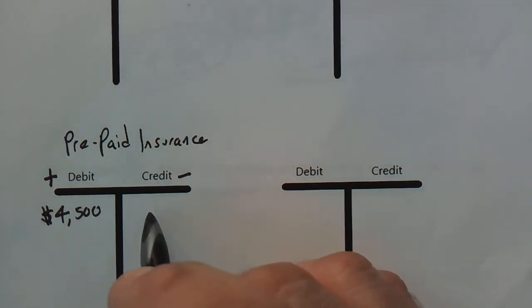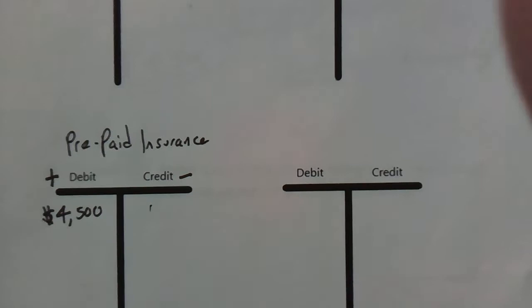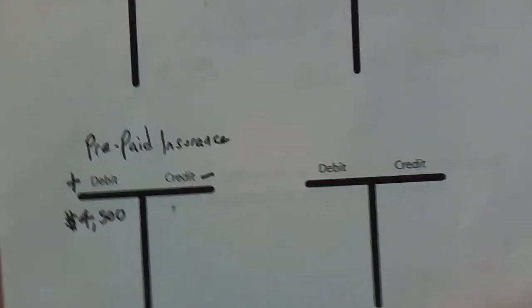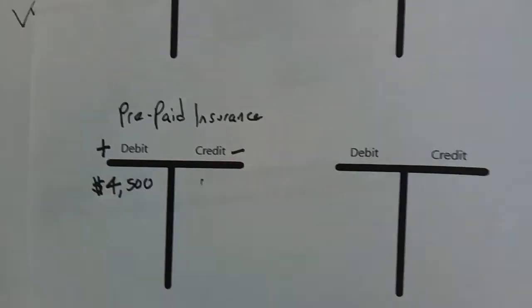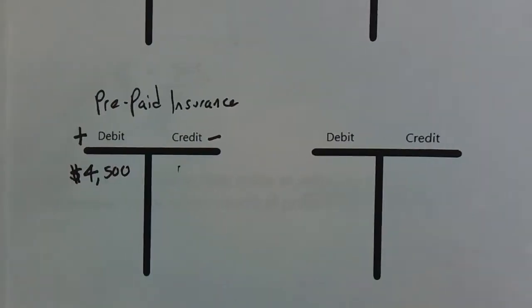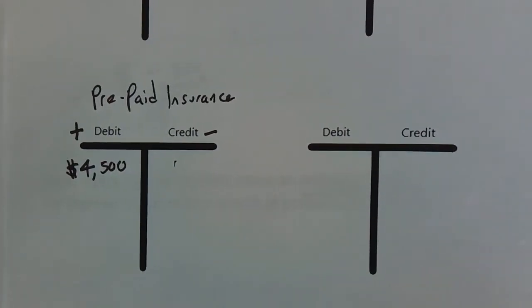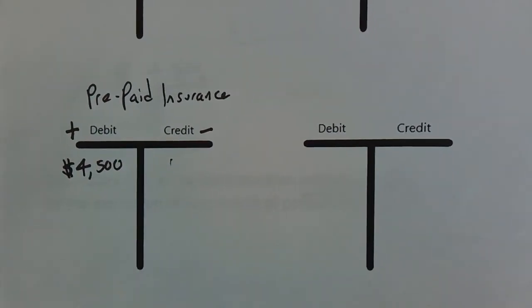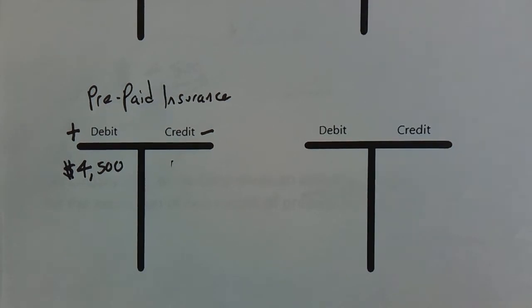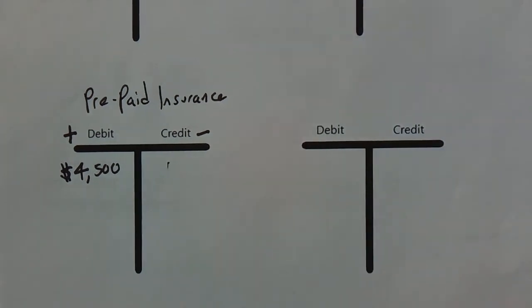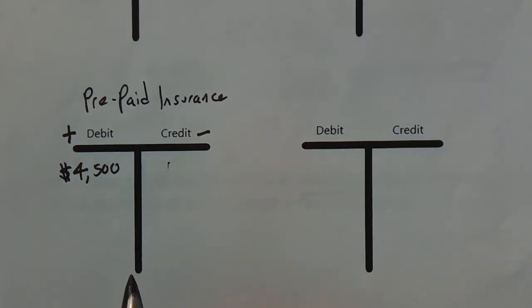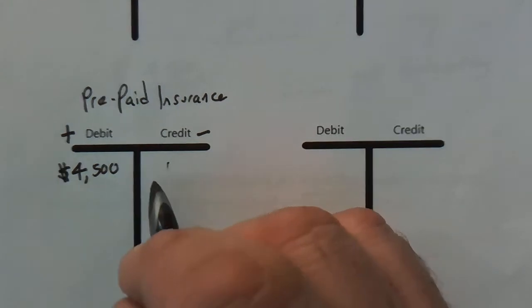Luckily the building did not burn down, so we just need to account for that. So what we're going to do is our prepaid insurance is going to be reduced — we're going to reduce it by that first month's insurance, which is $1,500.